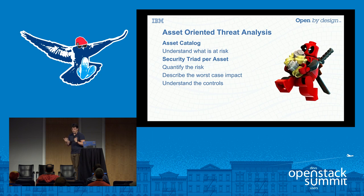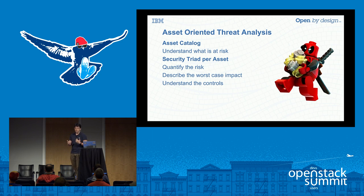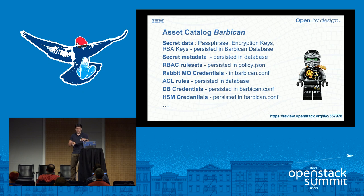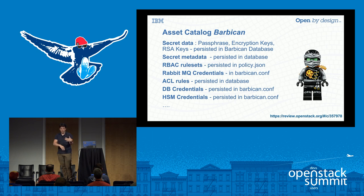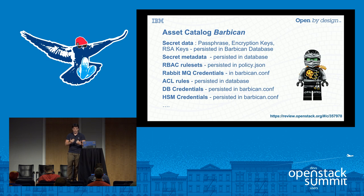We do this asset-oriented threat analysis because through trial and error it was the most scalable way. The idea is to understand what's at risk, quantify that, and describe the worst-case impact. After a team has a diagram, they consider what's actually in these different components. In Barbican's case - just a snippet - there was secret data, secret metadata, those are the key things Barbican moves around and manipulates. There are also things like RBAC rule sets and RabbitMQ credentials. All these different credentials could be in one file, but we don't say the barbican.conf file is an asset - we look at the individual things. Individual credentials live there, but they might be overridable in environment variables or provided through the API.